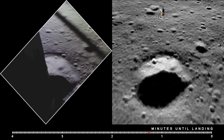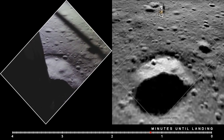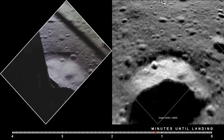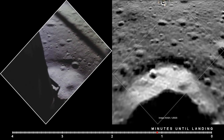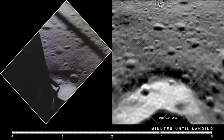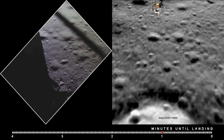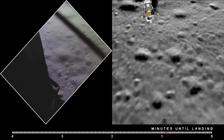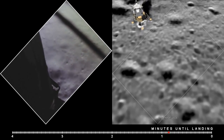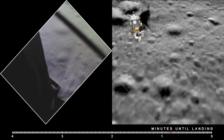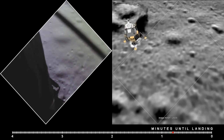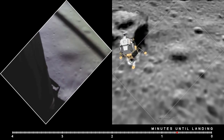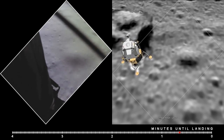200 feet, 4 and a half down, 5 and a half down. Within 60. 6 and a half down, 5 and a half down. 9 forward. Good. And 20 feet. 100 feet, 3 and a half down, 9 forward. 5 percent. 105. Okay, 75 feet — that's looking good. Down at half. 6 forward.